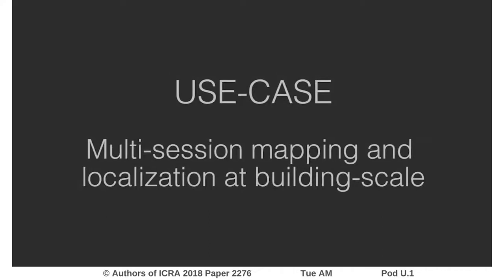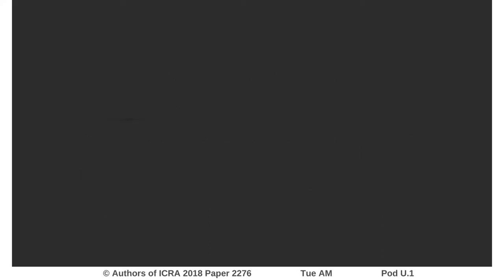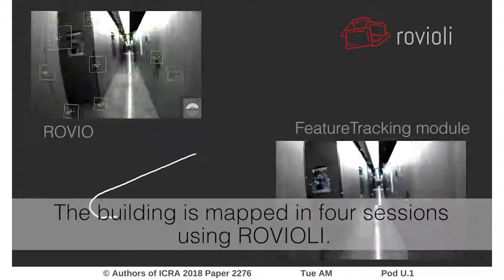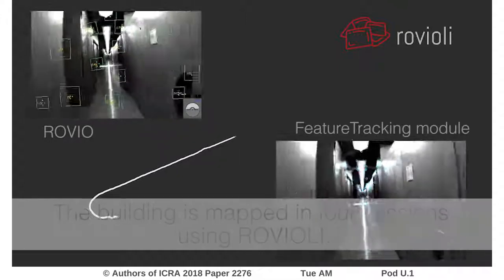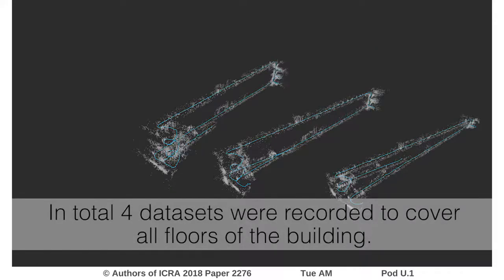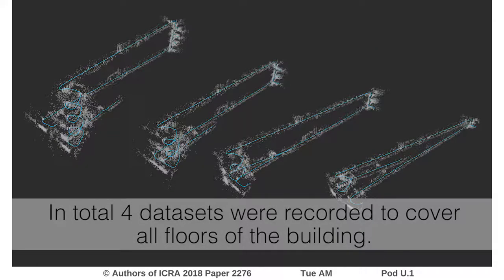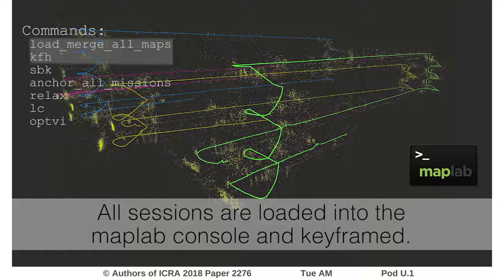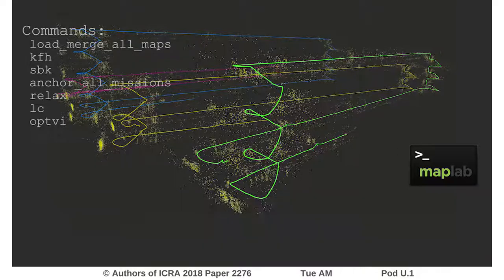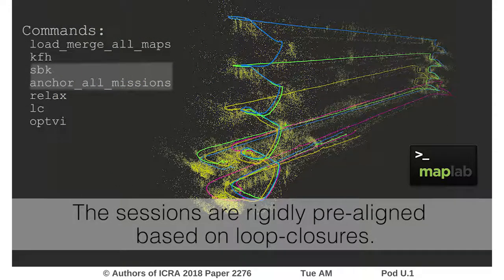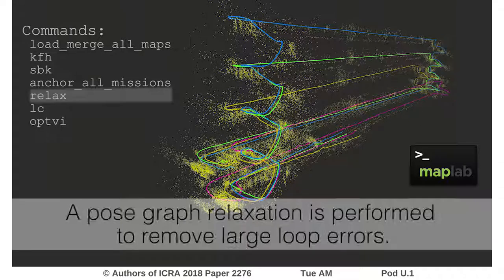MapLab can be used for mapping and localization at building scale. A map can be created from multiple Rovioli sessions using MapLab. The sessions are loaded from the console and manipulated using commands shown on the left. We start by keyframing the maps to save resources. Then they are rigidly aligned based on loop closures, and large errors are rectified using robust pose graph relaxation.